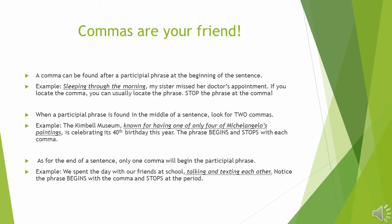Look at "known" — that is the participle. Yes, it does not end in -ing or -ed because it's an irregular verb. What if the participial phrase comes at the end of the sentence? It starts with a comma. Look at the example: "We spent the day with our friends at school, talking and texting each other." "Talking" is an -ing word. "We" is the subject, "spent" is the main verb, so "talking" and "texting" are the participles. Notice that the phrase begins with a comma, and when you underline it, you stop at the period at the end. That's all there is to finding and underlining participial phrases.